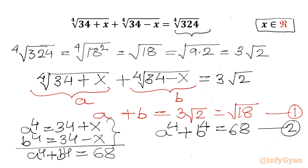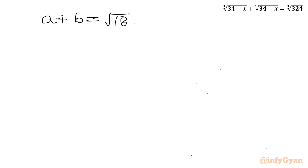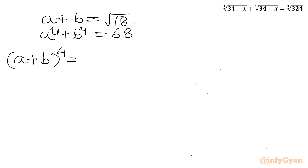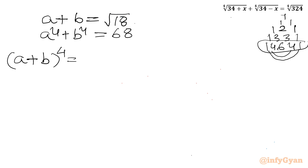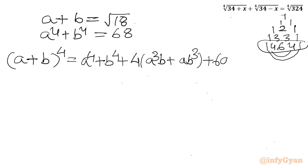So we have to solve this new system of equations for the value of a or b. Once a is known, x is known. The system is: a plus b equals square root of 18, and a⁴ plus b⁴ equals 68. Now I will use the binomial expansion of (a plus b) to the power 4. The coefficients of expansion for power 4 are 1, 4, 6, 4, 1. Grouping terms: a⁴ plus b⁴ plus 4(a³b plus ab³) plus 6a²b².